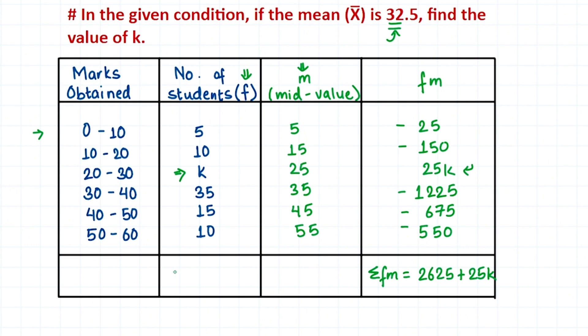Similarly, we need n, the number of items, which is the sum of the frequencies. When you add all these numbers, you get 75 plus k. So we have 75 plus k as the number of items.